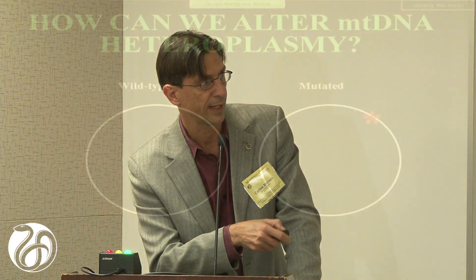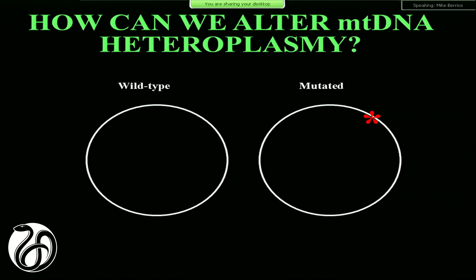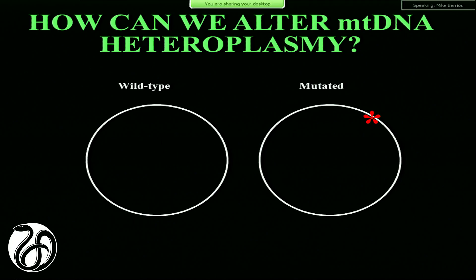For many years, people in the field have been thinking about how we can target the mutant and not the wild-type mitochondrial DNA. One way is to find some way to cut it specifically. There are a class of enzymes that cut DNA very specifically — restriction endonucleases, which are bacterial enzymes that can recognize small specific sequences and cleave. And we started trying that approach.